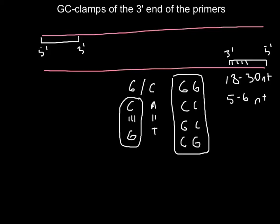But don't think to put all G's and C's for the last five or six nucleotides, because if you put such a sequence that has many G's and C's, this may lead to formation of primer dimers.